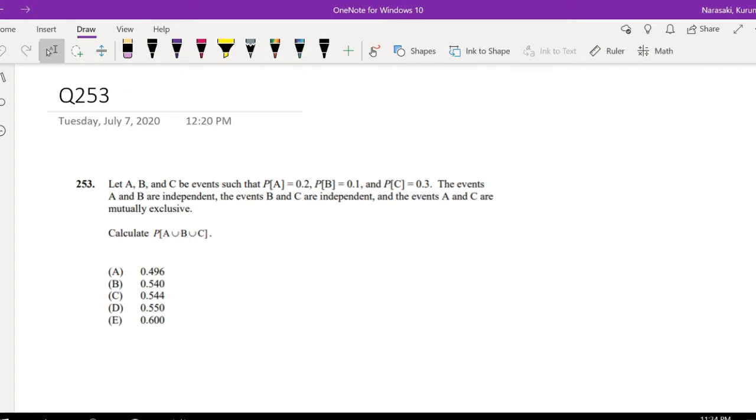Okay, assume you already attempted it, let's just dive right in. A, B, and C have events such that P(A) = 0.2, P(B) = 0.1, and P(C) = 0.3. The events A and B are independent, the events B and C are independent, and the events A and C are mutually exclusive.